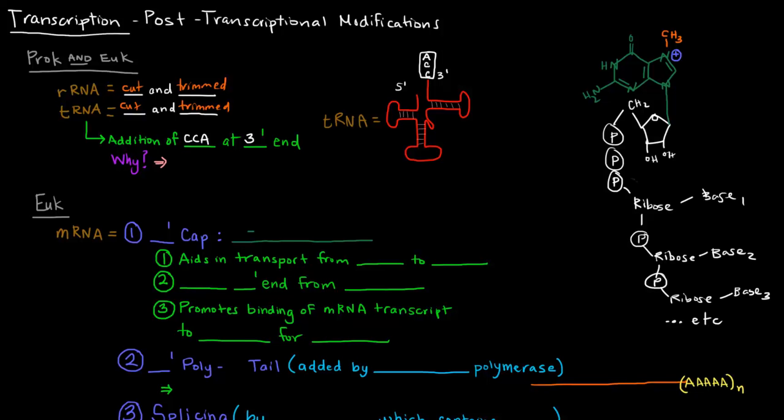And what's the reason for that? This CCA is important because it is the attachment site of amino acids that are going to be incorporated in translation. So amino acids will actually attach to the CCA end right here. So there will be an amino acid attached there, and the tRNA will bring it to the ribosome for translation.